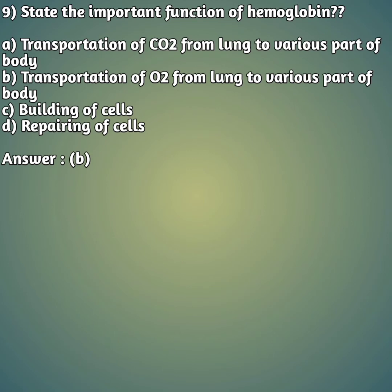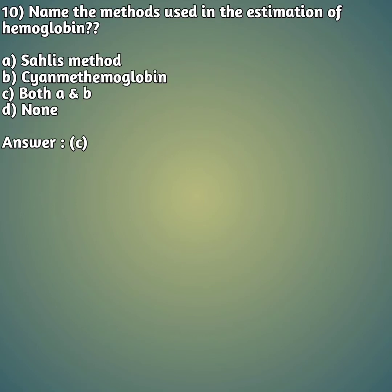Ninth question: state the important function of hemoglobin. Option A: transportation of CO2 from lungs to various parts of the body. Option B: transportation of O2 from lungs to various parts of the body. Option C: building of cells. Option D: repairing of cells. The right answer is option B — transportation of oxygen from lungs to various parts of the body.